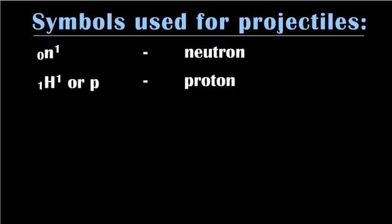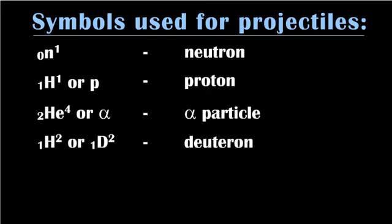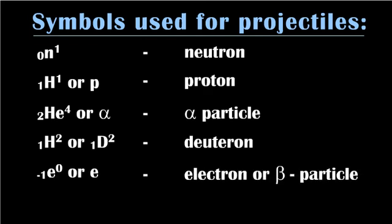The symbols used for projectiles are represented as given. 0n1 represents neutron. 1H1 or P represents proton. 2He4 or alpha represents alpha particle. 1H2 or 1D2 represents deuteron. -1e0 or e represents electron or beta particle. +1e0 represents positron.